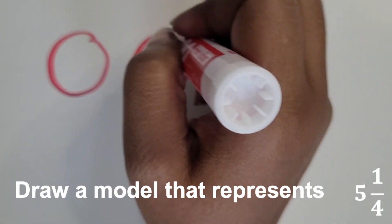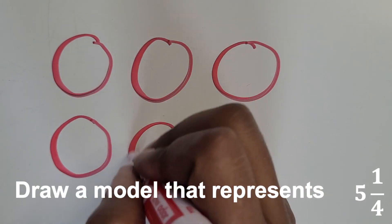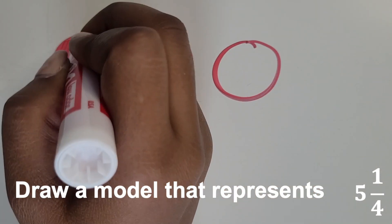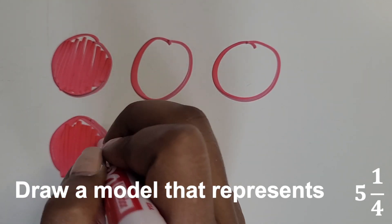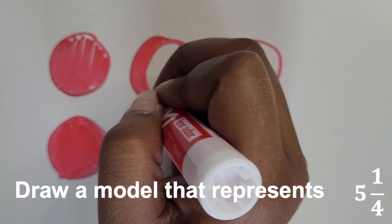Now let's represent five and one fourth. So we know we need five wholes. So we're drawing five circles and shading them all in to represent our five wholes.